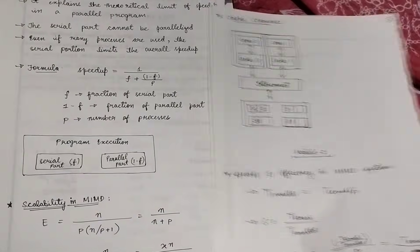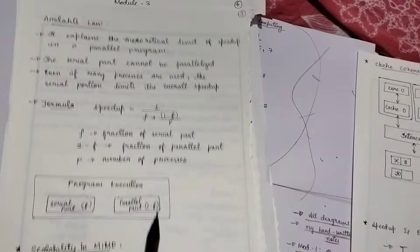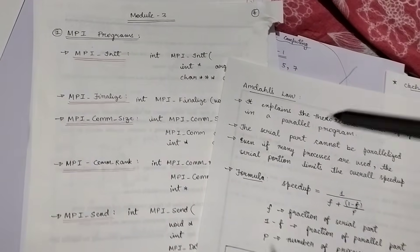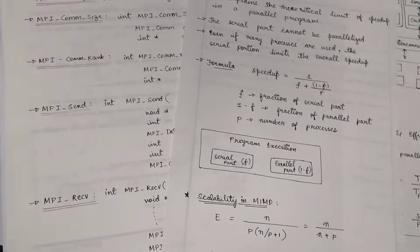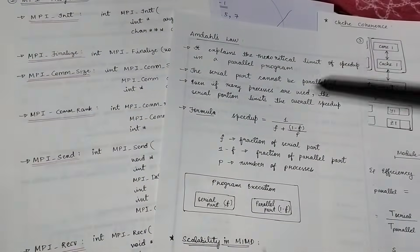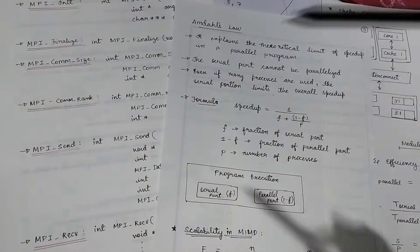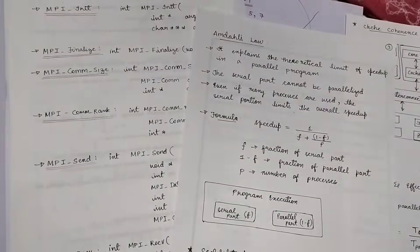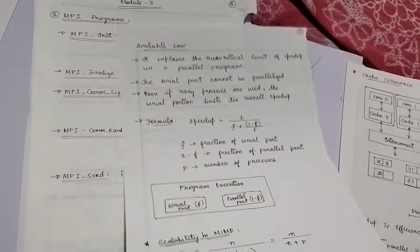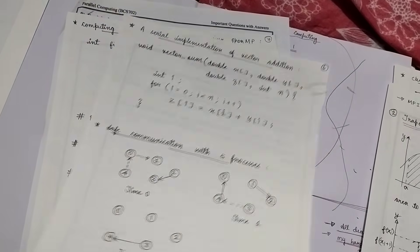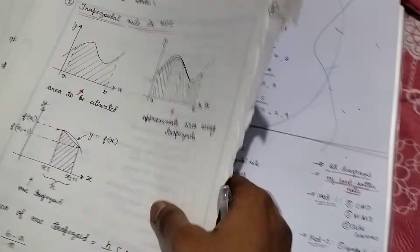Rule number two: my handwritten notes — every single thing. This is my major project. Every single diagram you learn — that is rule number one. And rule number two is you learn everything that I've written in these sheets: every single diagram, every single formula, every single line I have written in these sheets, because it's important.